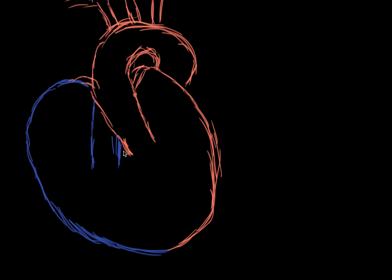We'll split our heart into left and right. Here on the blue side is the right side, which deals with de-oxygenated blood — blood that needs to go to the lungs to get oxygen. On the left side in red is the part of the heart that deals with oxygenated blood, which has come back from the lungs and is ready to go to the rest of the body.